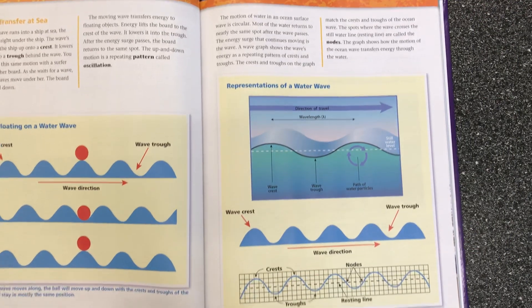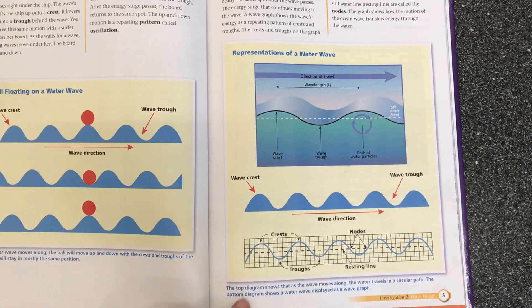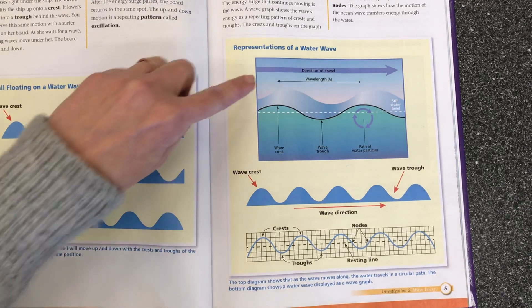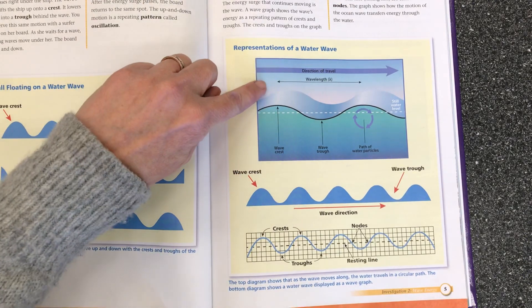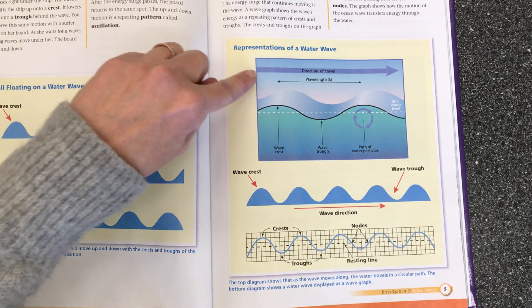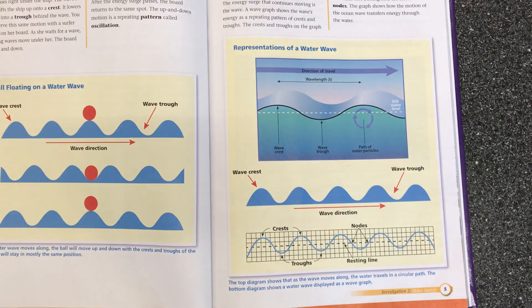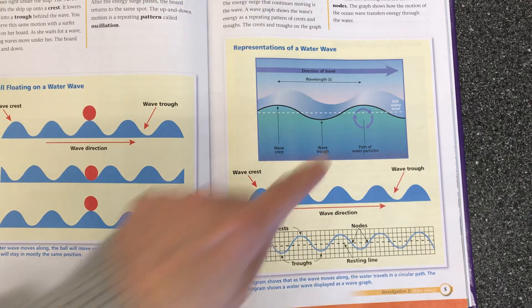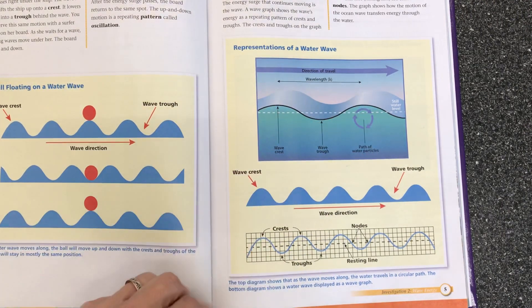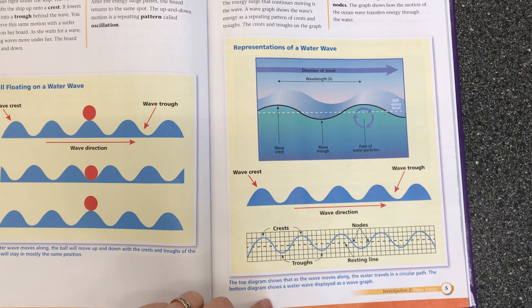I'm going to read the diagram here at the bottom. The top diagram shows that as the wave moves along, the water travels in a circular path. The bottom diagram shows a water wave displayed as a wave graph.